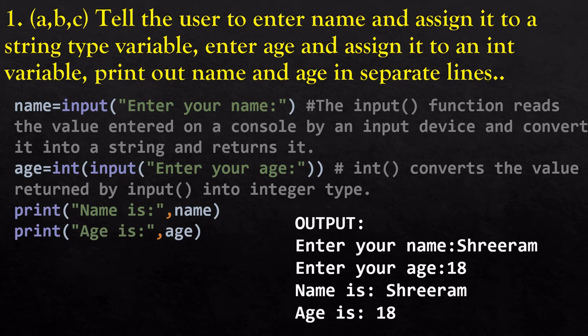You can simply print name and age and see the output. It will ask the user to enter the name, the user can enter any name, and then it will ask to enter age. You can enter any age, but it will be taken as a string so you have to convert it into integer using the int function.